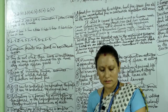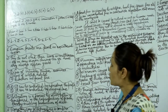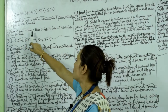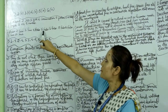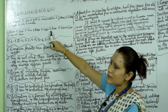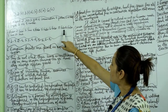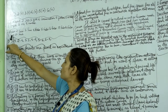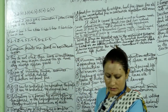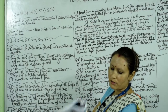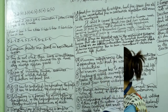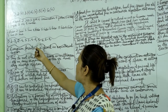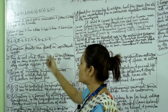True or false: one — false; two — true; three — true; four — false; five — false; six — false; seven — false; eight — false; nine — true; ten — true. Match the following: one with three; two with four; three with one; four with two; five with six; and six with five.